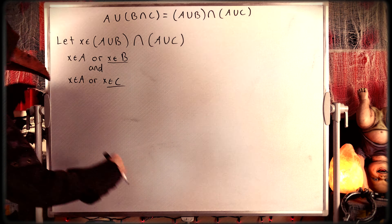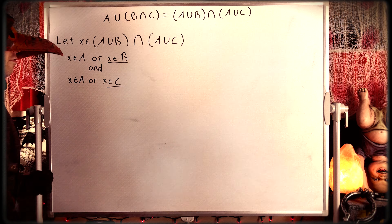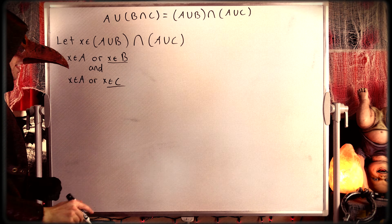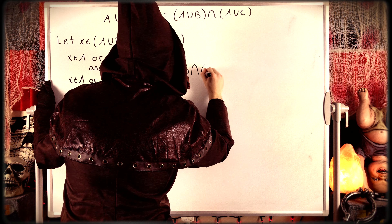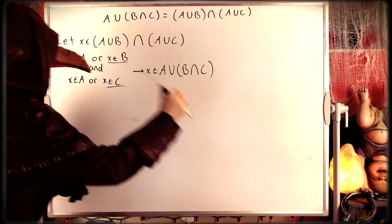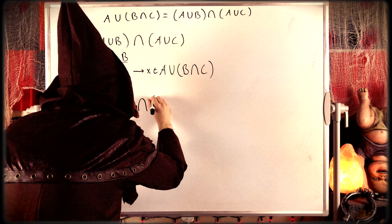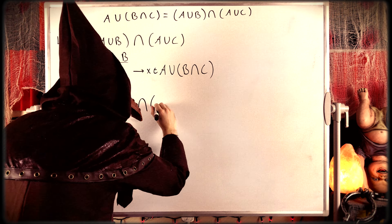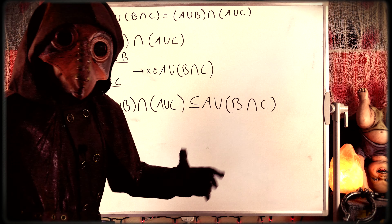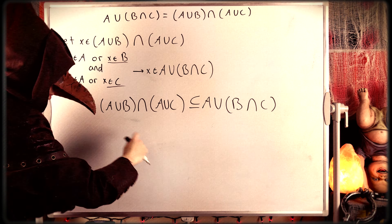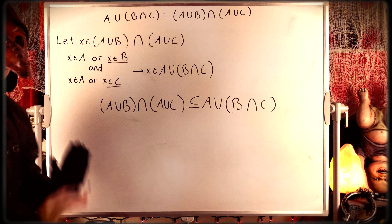So we've proven that any element of (A union B) intersect (A union C) must also be an element of A union (B intersect C). Thus by definition of subset, (A union B) intersect (A union C) is a subset of A union (B intersect C). In the first part we proved that A union (B intersect C) is a subset of (A union B) intersect (A union C), and we just proved the reverse. Since both sets are subsets of each other, that proves the set equality.